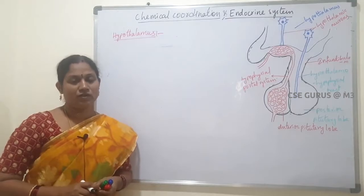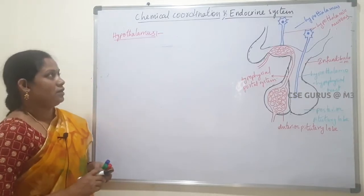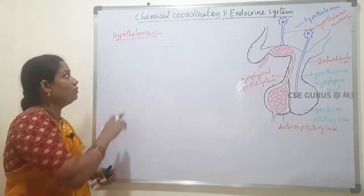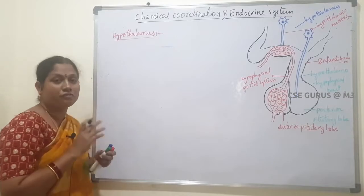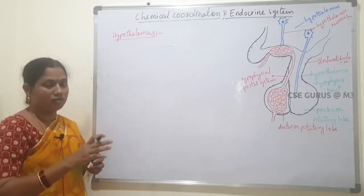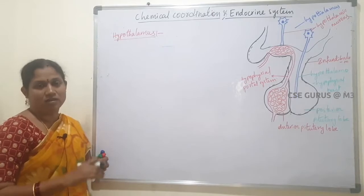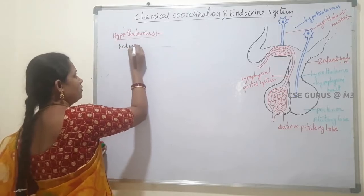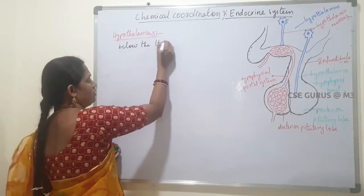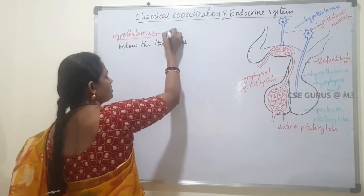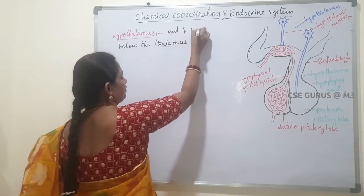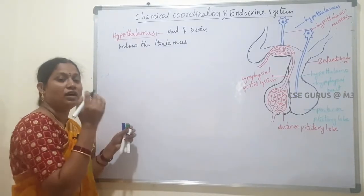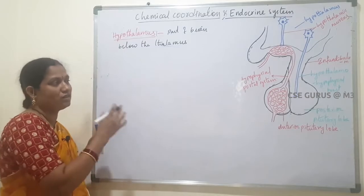In this video on hypothalamus, before going to learn the endocrine system, we will first learn about hypothalamus. Hypothalamus is a part of the brain. In the forebrain, the diencephalon is present, and hypothalamus is a part of diencephalon, located below the thalamus. It connects the nervous system and the endocrine system, making it very important.